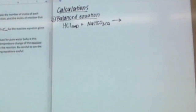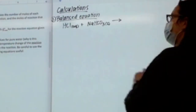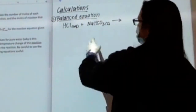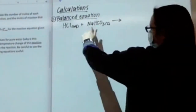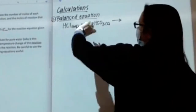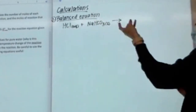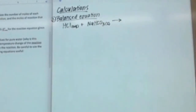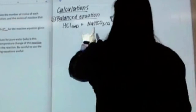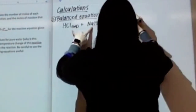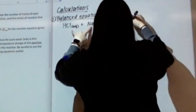This is a double replacement reaction. Sodium and hydrogen are going to replace each other, so one of the products will be NaCl.